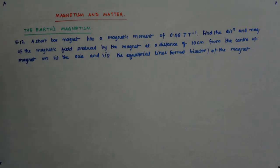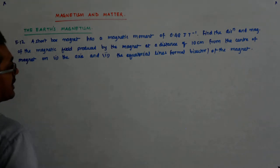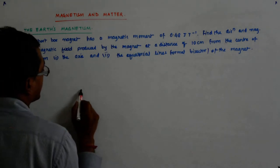And second, on the equatorial line, that is the normal bisector of the magnet.